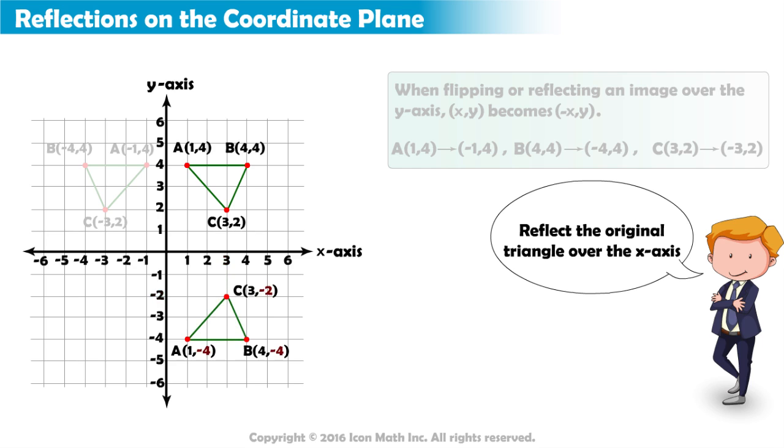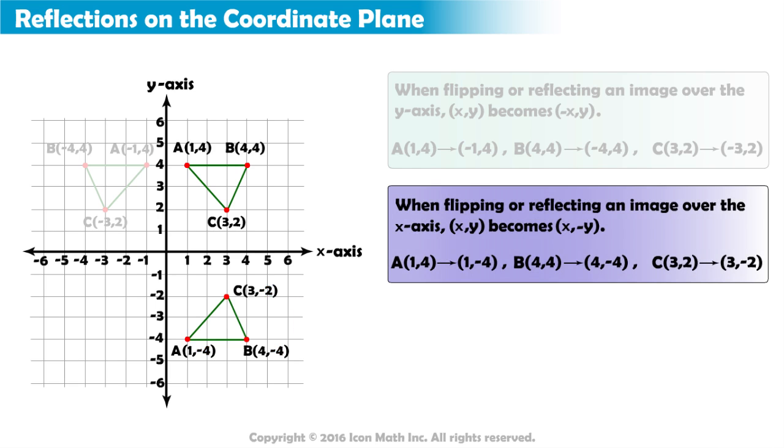What happened to all of the y-values when we reflected them over the x-axis? That's right, they all became the opposite.